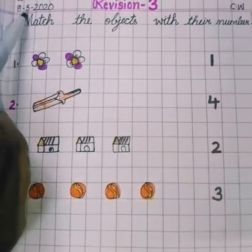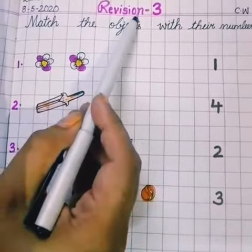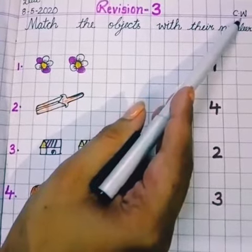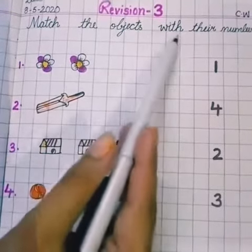Okay, write down the date here, 8-5-2020, revision number 3. On the left corner, you have to write down flowers. Our today's topic, match the objects with their number.